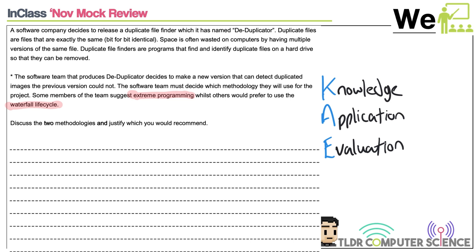Here's an example: Timmy wants to sort users on his social media website. He and Bobby are debating whether to use bubble sort or quick sort. You state what you know about each — time complexity, effect of n — then apply it: it depends how many users the website has. The evaluation would be something like: for any substantial number of users, strongly recommend quick sort because of its O(n log n) time complexity and scalability.